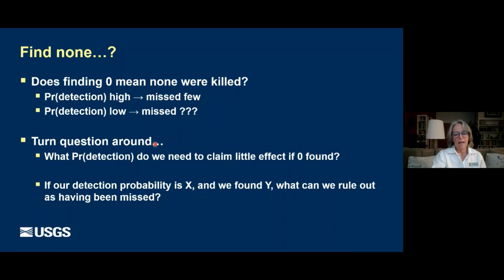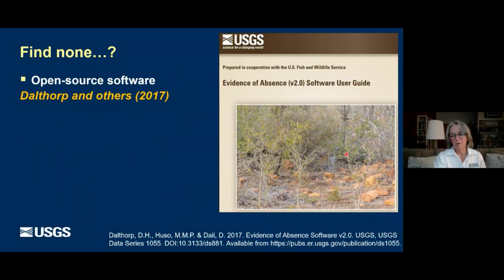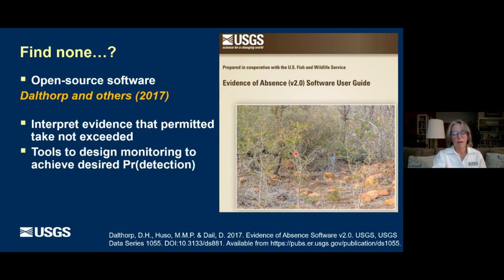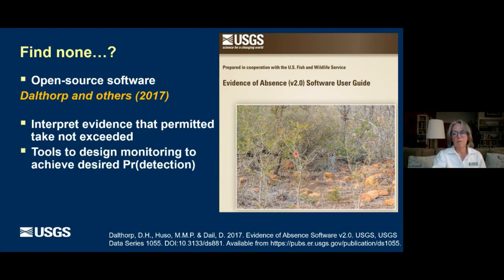We turned this question around and said: let's give industry and Fish and Wildlife information on what kind of detection probability they should be shooting for in order to claim that few, if any, endangered species were killed when none were found. This resulted in a completely different piece of software called Evidence of Absence — the leopard in the image shows how difficult it is to give evidence of absence — so that people can interpret the evidence that permitted take at facilities has not been exceeded. We also provide tools to design monitoring to achieve that probability of detection and to project current take rates into the future to help with species management.